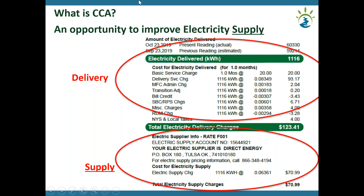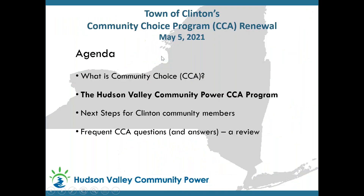Central Hudson only makes money on delivery — they have not made money on supply since deregulation in the late 1990s. So choosing a third-party supplier or participating in the CCA does not take money away from Central Hudson. That's a common question we receive.